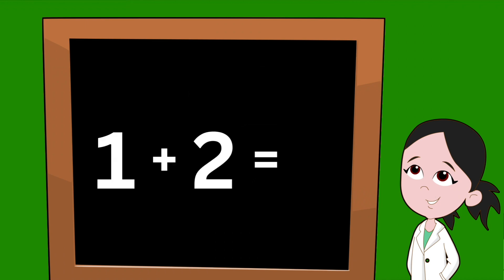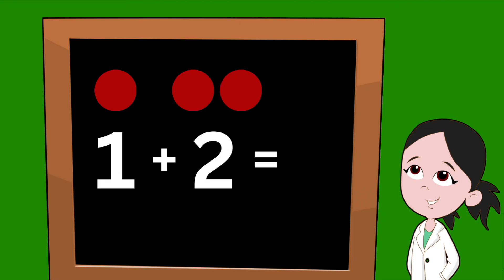Here we have a simple equation: one plus two. To make sure we get the right answer we're going to use circles to do addition. Over the number one we're going to draw one circle. Over the number two we're going to draw two circles.